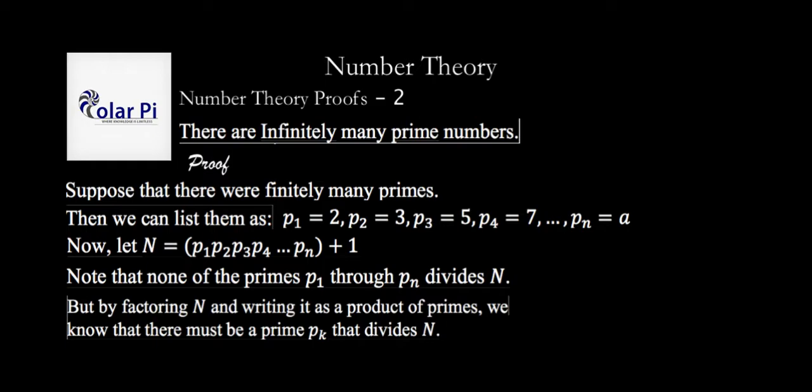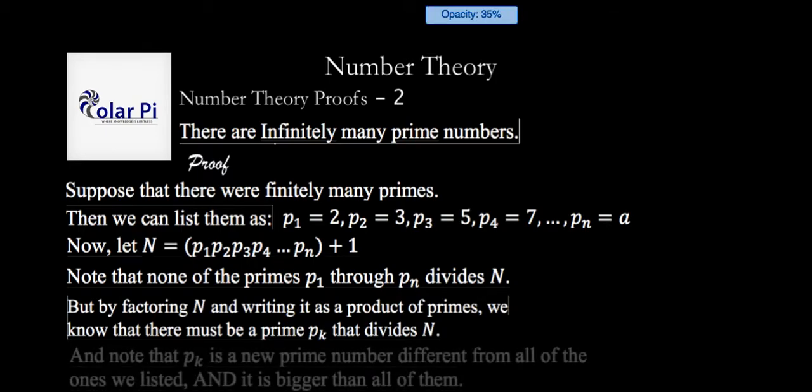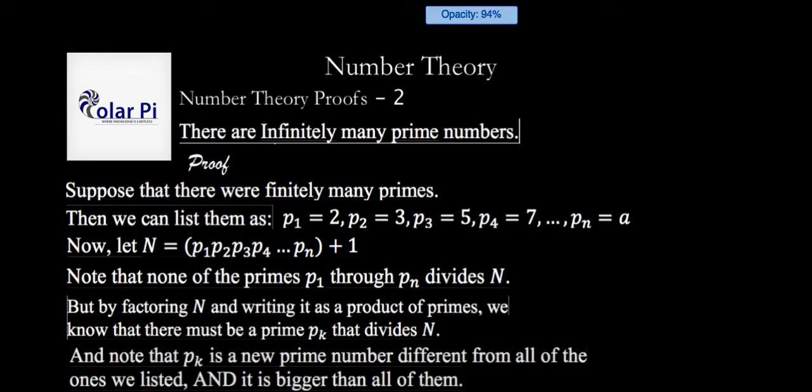So then there must be some prime number P sub K that divides this number N. We said that none of the primes P1 through PN divide this number N, but there must be some prime number P sub K, which divides N. And notice that this prime number P sub K is a new number different from any of the ones we listed, right?